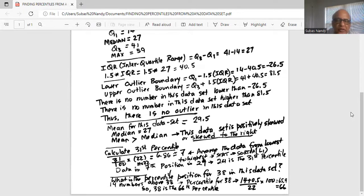That means 24 is the 31st percentile. What does it mean? That means 31% of this data set is below 24.